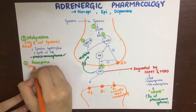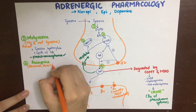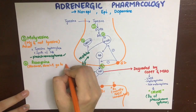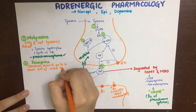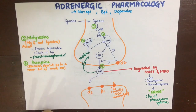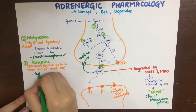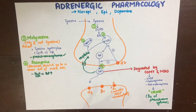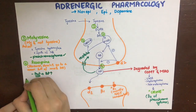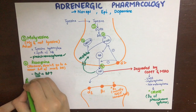The second drug, acting at site number two, is reserpine. It acts by inhibiting the uptake of dopamine into storage vesicles, thus preventing its conversion into noradrenaline. A memory aid: reserpine is a 'reserved' drug — it does not allow dopamine into a room already full. It was used in the past to treat hypertension but is no longer used.